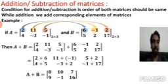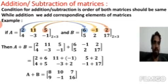The final result A plus B: 2 plus 6 is 8, 11 minus 1 is 10, 5 plus 2 is 7, 4 plus 5 is 9, minus 3 plus 2 is minus 1, and minus 1 plus 17 is 16.